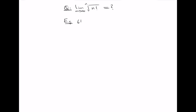If we look at 6 factorial, it's equal to 1 times 2 times 3 times 4 times 5 times 6. Notice that the last three factors — 4, 5, and 6 — are each greater than or equal to 3, and 3 is 6 divided by 2.